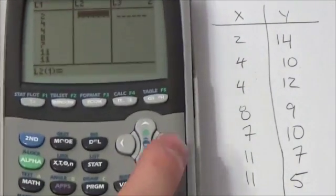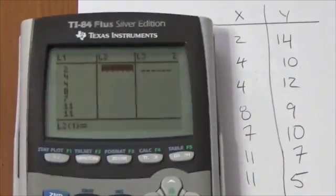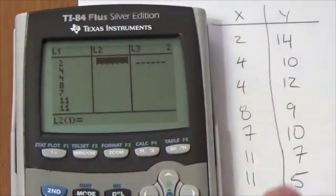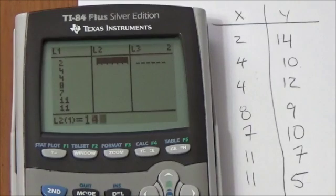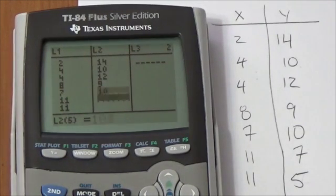Then I'm going to use my arrow key, the right arrow, to move over to the next list. And I'll enter in the y coordinates: 14, enter, 10, enter, 12, enter, 9, enter, 10, enter, 7, enter, 5, enter.